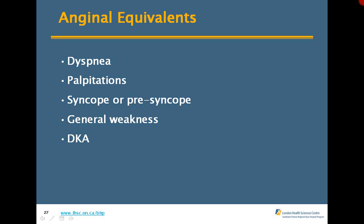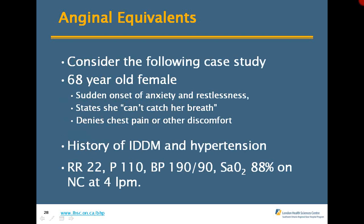Anginal equivalents are those presenting with dyspnea, palpitations, syncope or presyncope, or who are generally weak or are DKA patients. A classical anginal equivalent example: a 68-year-old female, sudden onset of anxiety, restless, states she can't catch her breath, denies any chest pain. She's insulin-dependent diabetic with hypertension. Everything points down the ACS road — treat as such.